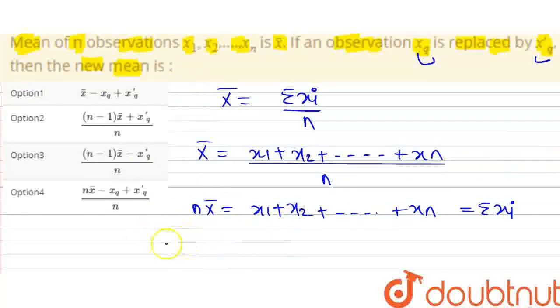What can we do about this? New summation xi. We have summation xi, we need to subtract xq and add x'q.